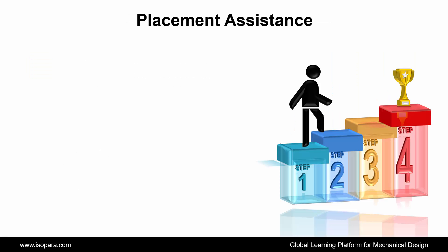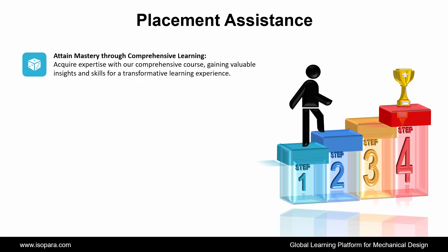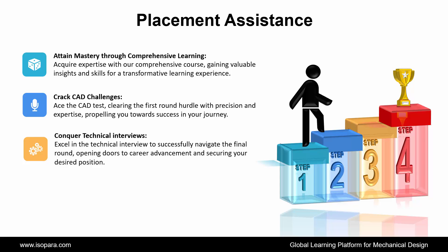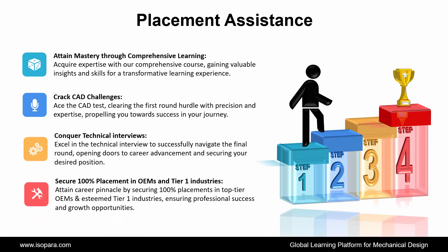Now we see placement assistance. ISOPARA's placement assistance works in four steps. First, attain mastery through comprehensive learning — acquire expertise with our comprehensive course, gaining valuable insights and skills for a transformative learning experience. Second, crack CAT challenges — ace the CAT test, clearing the first round hurdle with precision and expertise, propelling you towards success. Third, conquer technical interviews — excel in the technical interview to successfully navigate the final round, opening doors to career advancement. And fourth, secure 100% placement in OEM and Tier 1 industries — attaining career pinnacle in top-tier OEM and esteemed Tier 1 industries, ensuring professional success and growth opportunities.